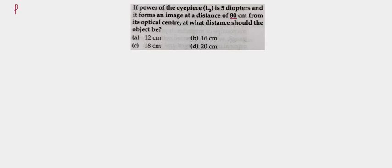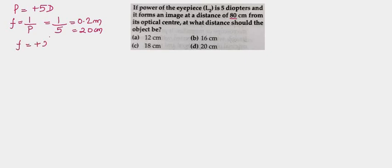Power is given as plus 5 diopter. The relation between power and focal length is f = 1/p, so f = 1/5 = 0.2 meter, which is 20 centimeter. So the focal length f is plus 20 centimeter. Since it is plus 20, that means it's a convex lens.